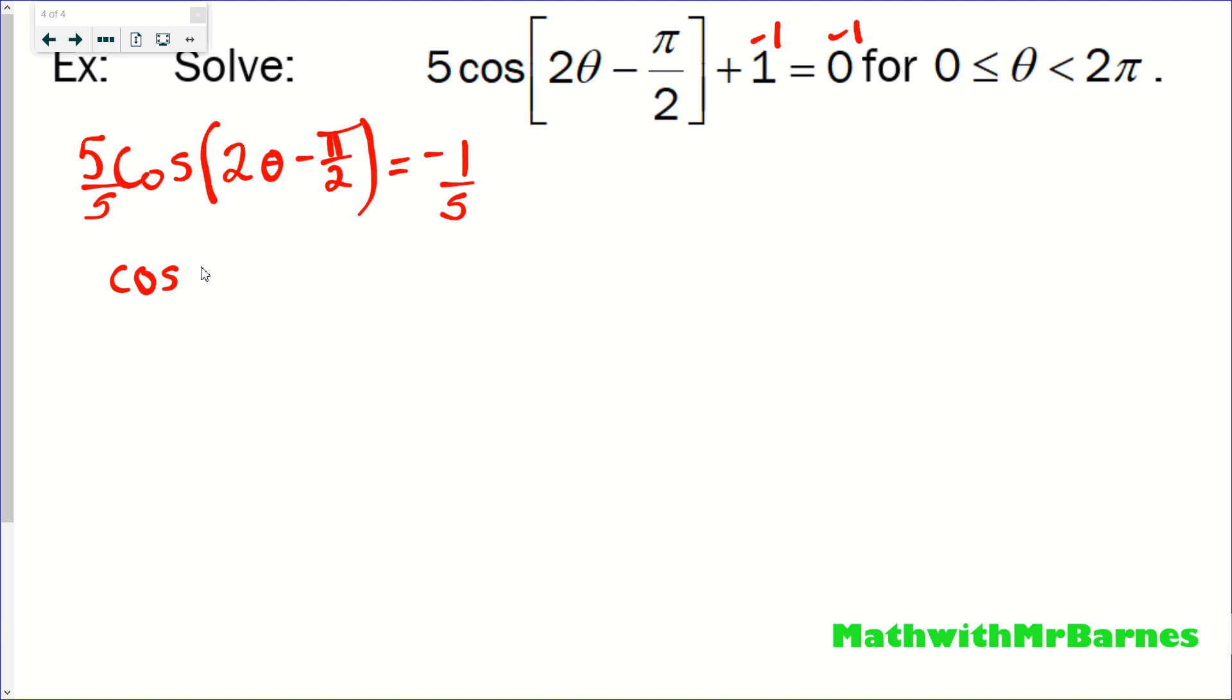We end up with cos of 2 theta minus pi over 2, and that equals negative 1 over 5. So, that's basically our trigonometric function ready to be solved.